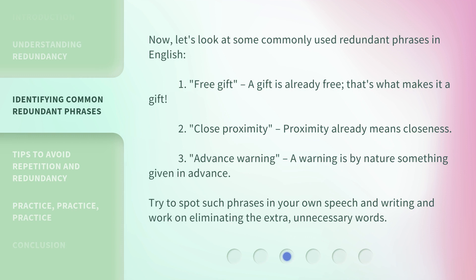Now, let's look at some commonly used redundant phrases in English. 1. Free gift — a gift is already free; that's what makes it a gift. 2. Close proximity — proximity already means closeness. 3. Advance warning — a warning is by nature something given in advance. Try to spot such phrases in your own speech and writing and work on eliminating the extra, unnecessary words.